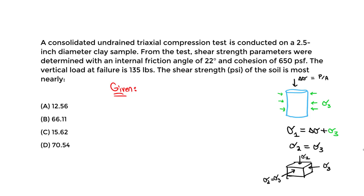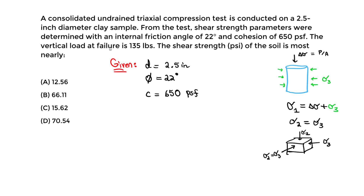The diameter d of the sample is 2.5 inches. The internal friction angle phi is 22 degrees. The cohesion c is 650 PSF — pounds per square foot. The vertical load at failure, P_f, is 135 pounds. We want to find the shear stress at failure, tau_f, in units of PSI — pounds per square inch.